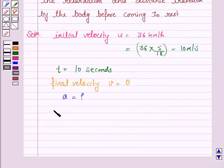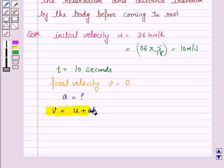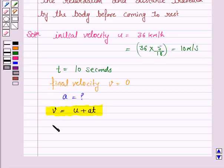We know that v equals u plus at, where v is the final velocity, u is the initial velocity, a is the acceleration, and t is the time taken. Let us substitute the values of t, v, and u in this formula.